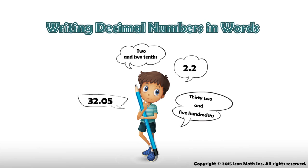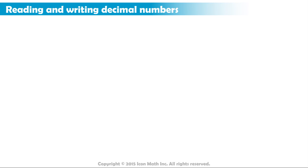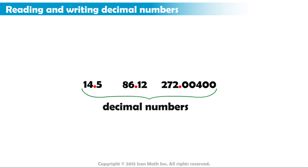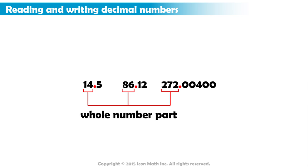Writing Decimal Numbers in Words. How do we read and write the following numbers in words? These are decimal numbers because they contain a whole number part and a decimal part, separated by a decimal point.